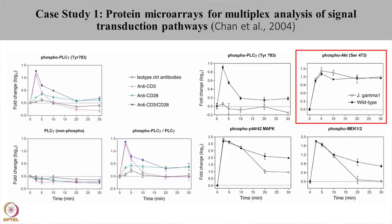When the phosphorylation status of AKT was examined, no change in phosphorylation status was seen in the wild type as well as in the mutant cell lines. This infers that the presence of phospholipase C does not affect the phosphorylation kinetics of AKT protein.